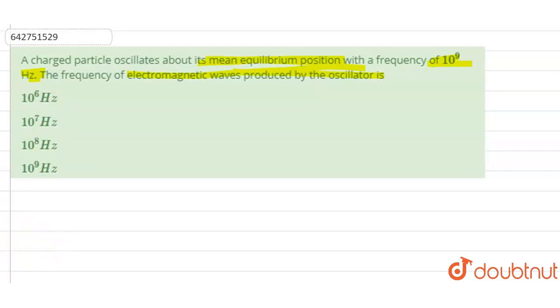So to understand this question, we need to understand a diagram. Let me use a pen. So we need to understand a diagram - how this particle must be oscillating.